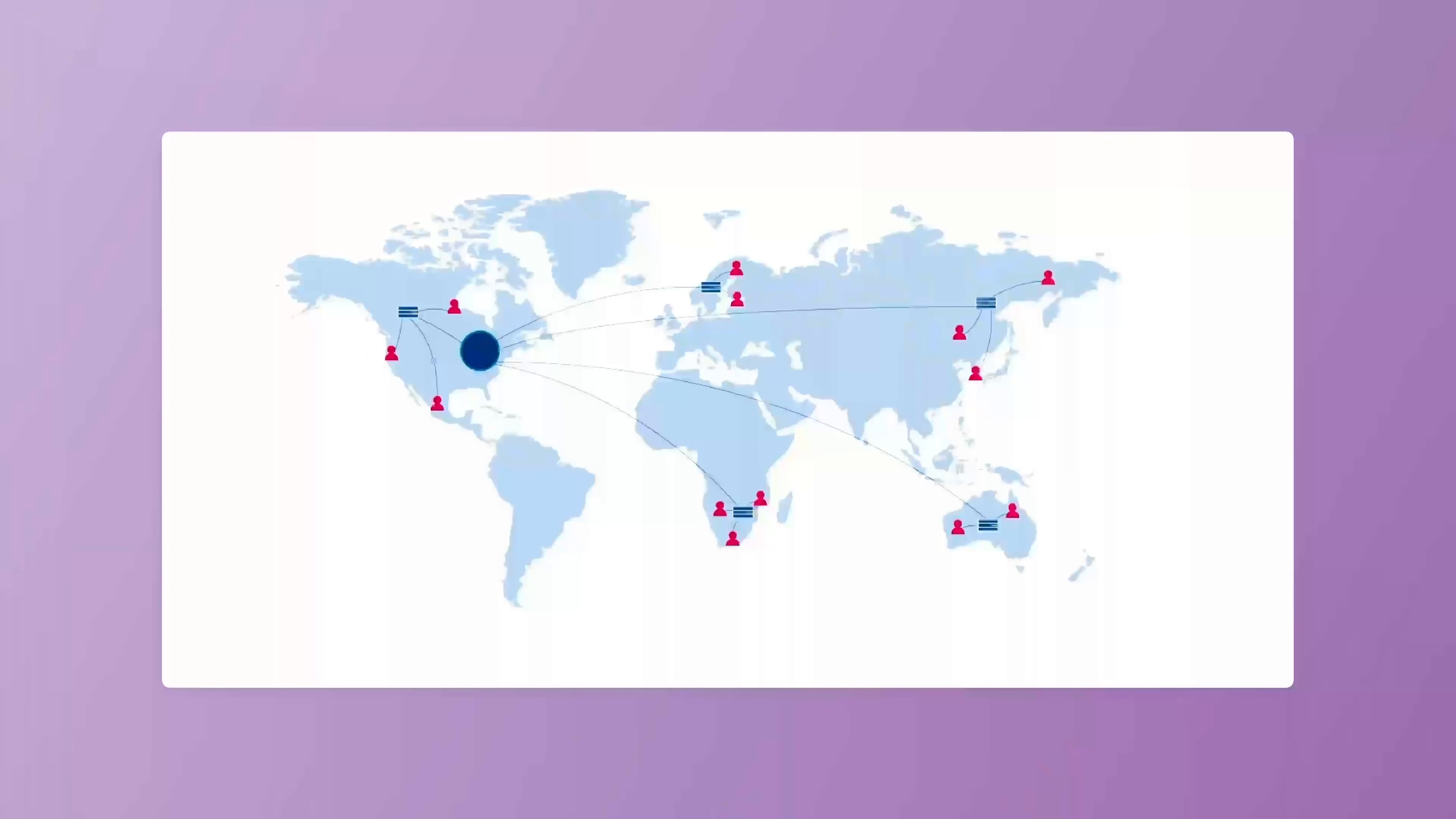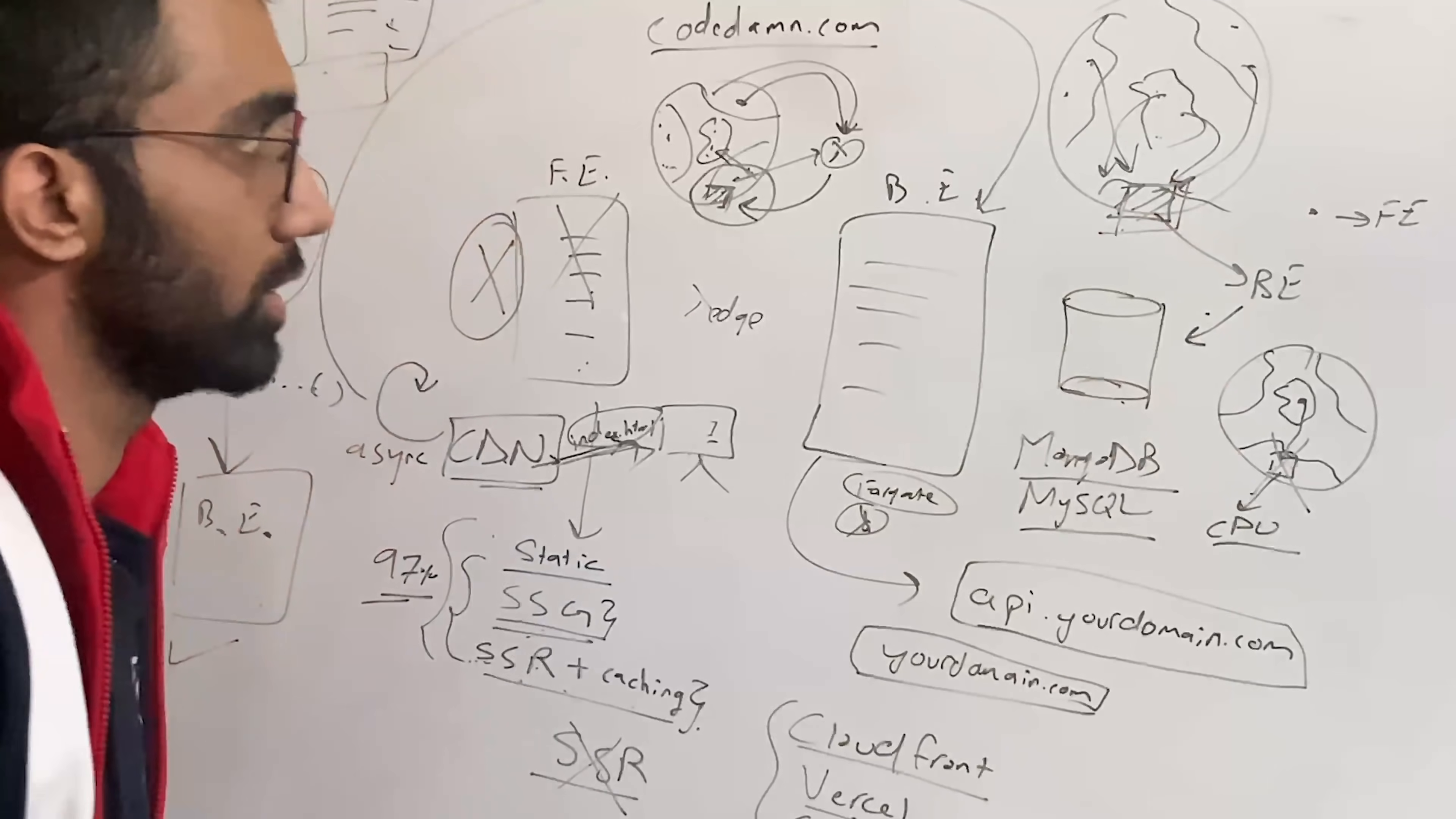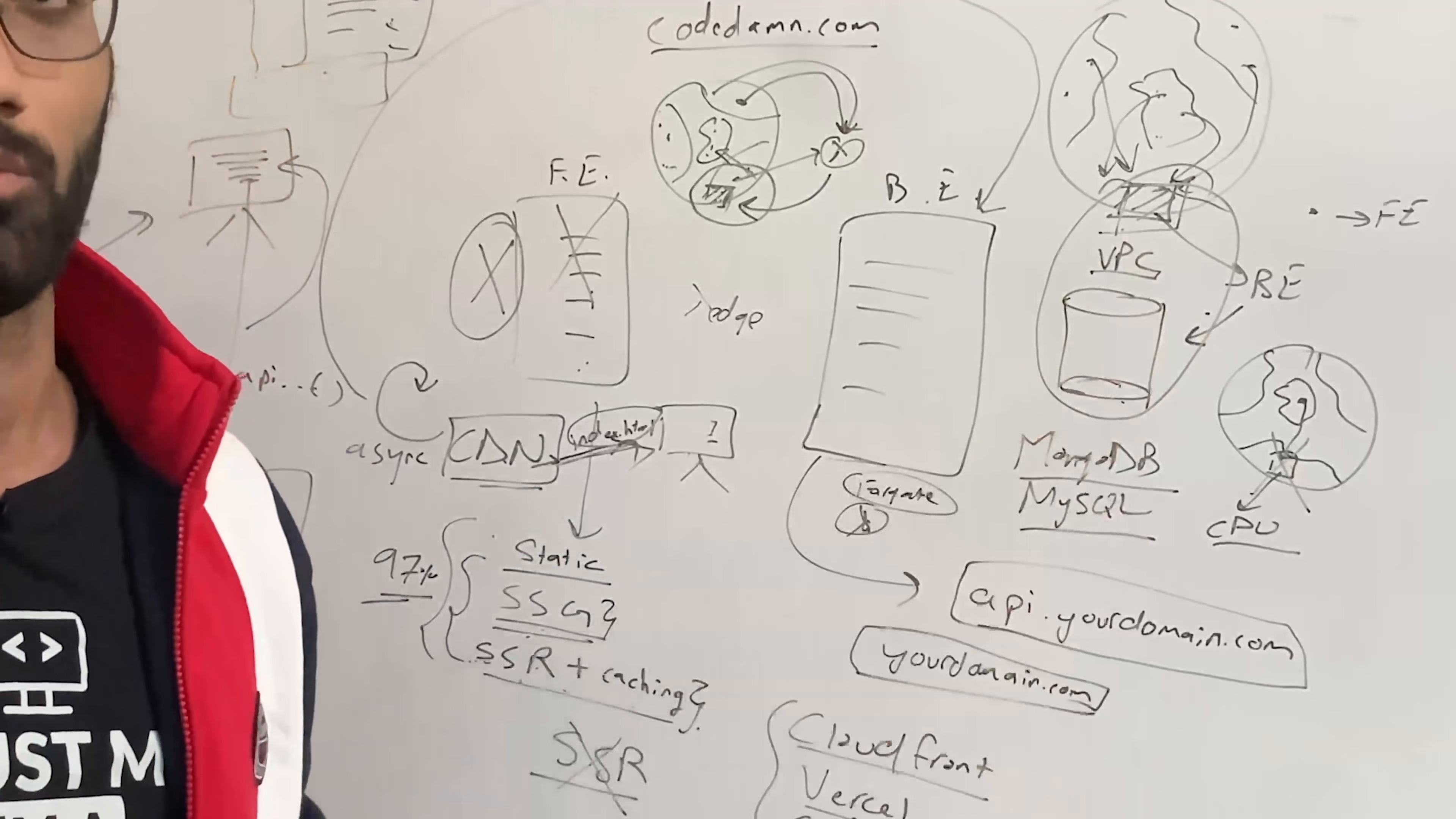So just ditch the single server based model, switch to a model where your front ends at least are served from all over the world using a CDN like CloudFront, Vercel, Cloudflare, things like these. And your backend maybe if you want is localized to a specific location where inside the VPC you also have access to your database. That's basically what we use at codedum and I believe this is something which you should use as well.